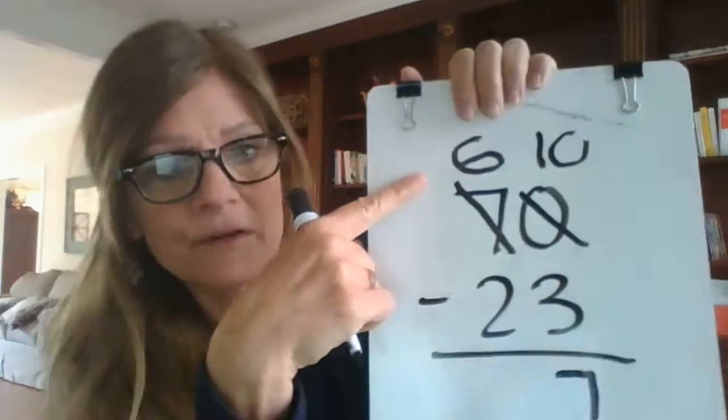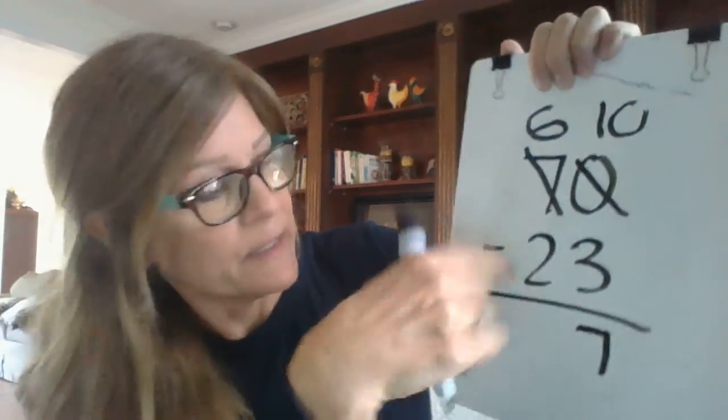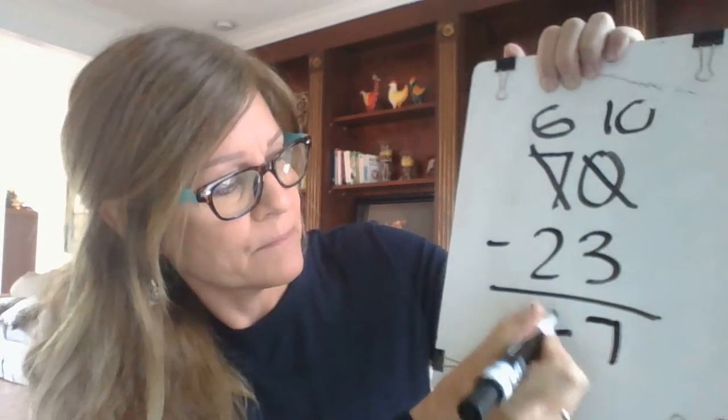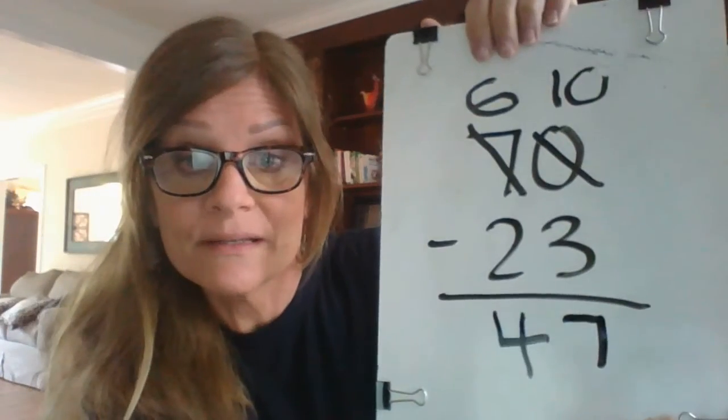Then I'm going to go to my tens column. Six minus two is four. So seventy minus twenty-three equals forty-seven.